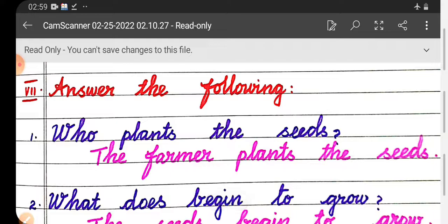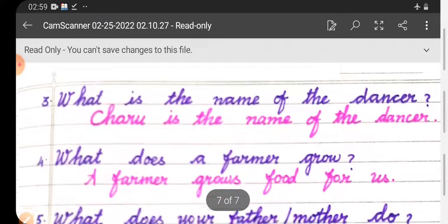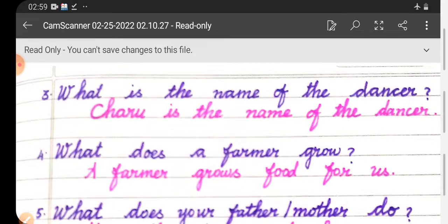Then seventh roman letter, answer the following. First one, who plants the seeds? The farmer plants the seeds. Second one, what does begin to grow? Third one, what is the name of the dancer? Charu is the name of the dancer. Fourth one, what does a farmer grow? A farmer grows food for us.